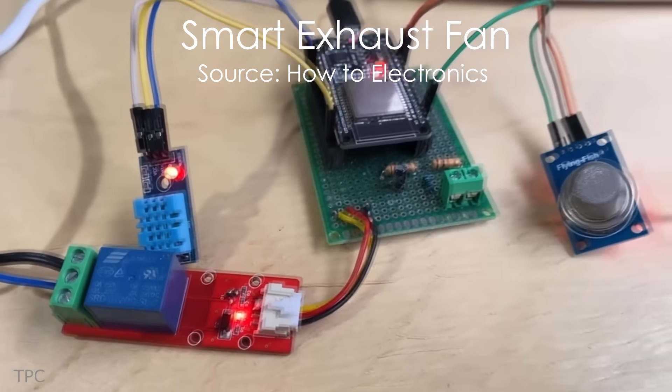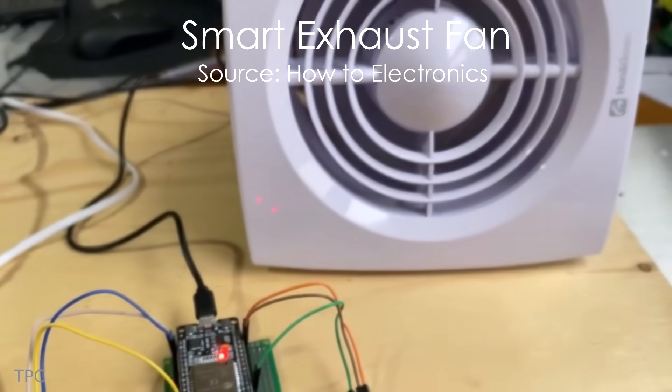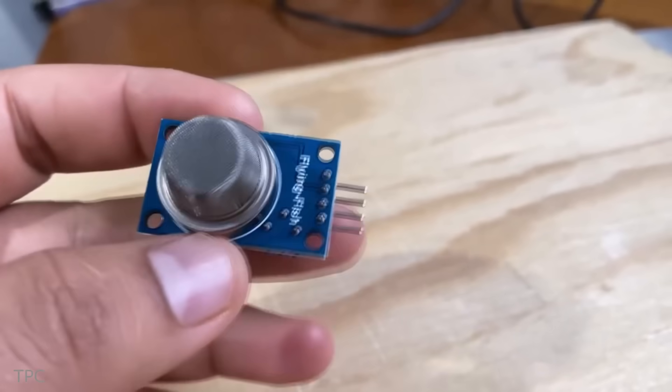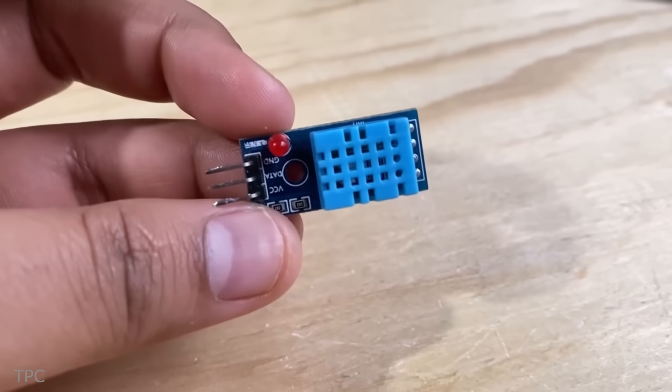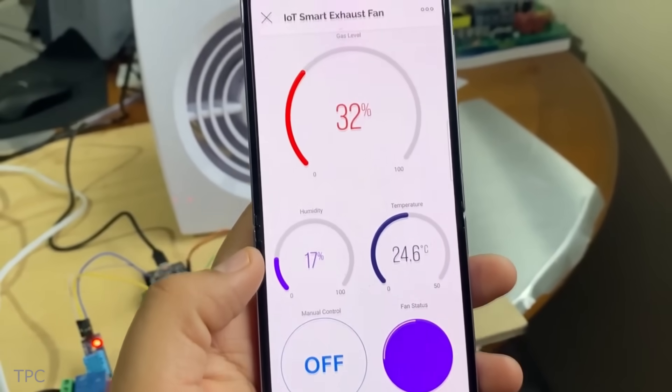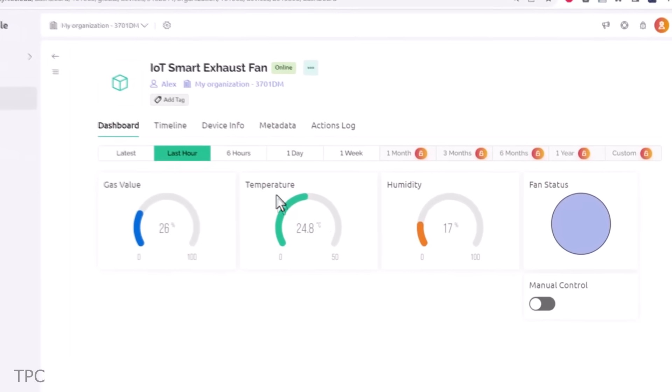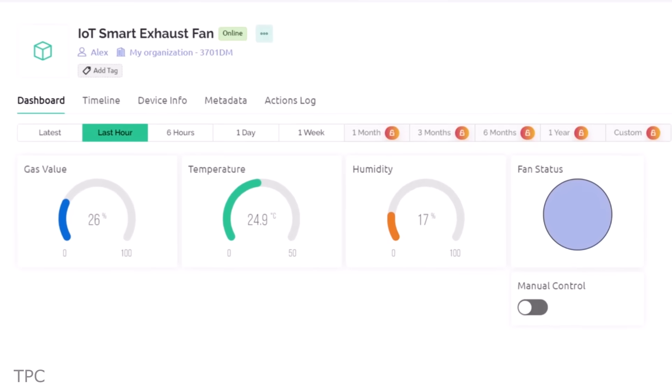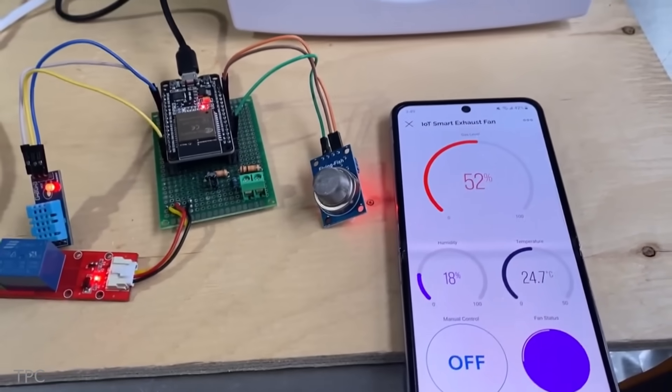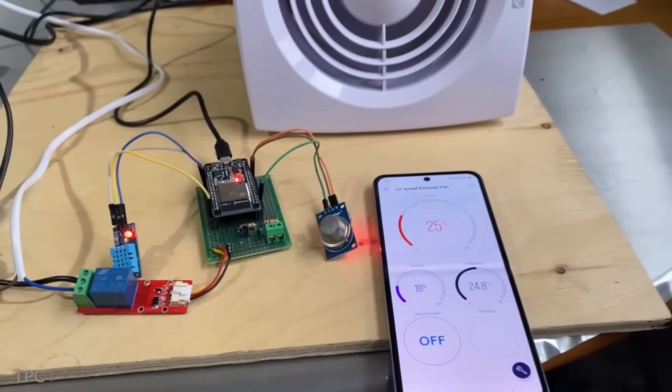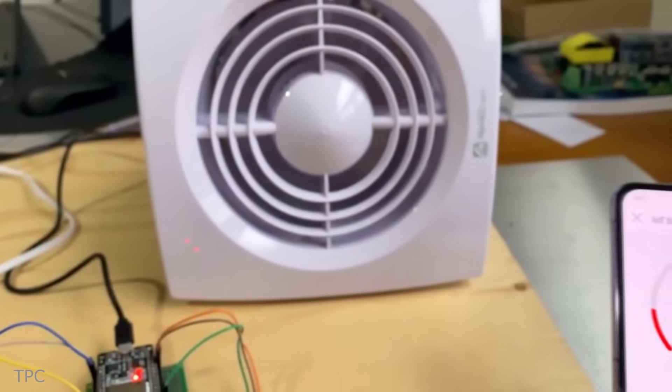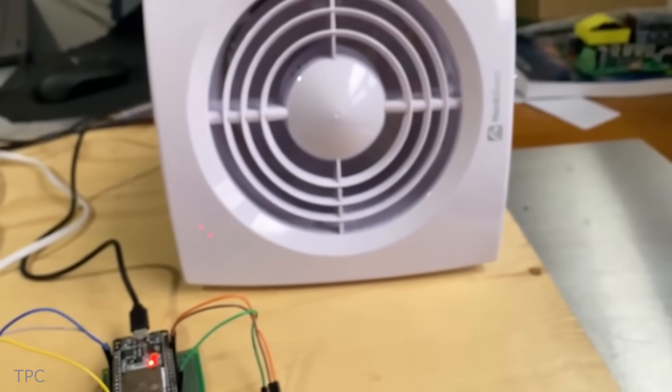Number 12. Next on the list, we have a smart exhaust fan system powered by the ESP microcontroller. It uses an MQ2 gas sensor and the DHT11 humidity temperature sensor to keep track of gas levels, temperature, and humidity. All this data is seamlessly transmitted to the dynamic Blink dashboard, providing you with real-time insights. If the system detects too much gas levels, the fan turns on to clear the air and keep things safe and clean. Moreover, you can control the fan manually using the dashboard, offering personalized control based on individual needs or preferences.